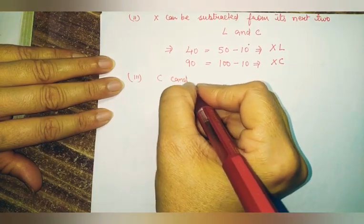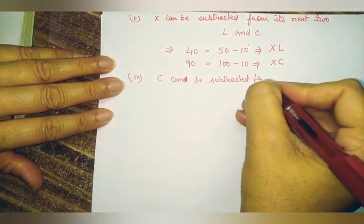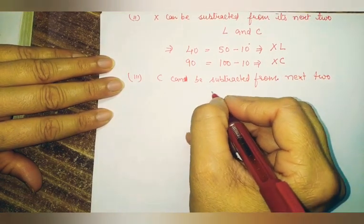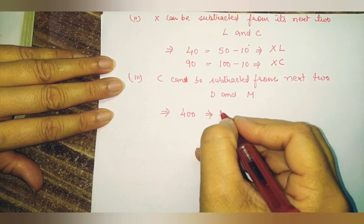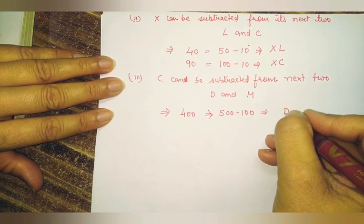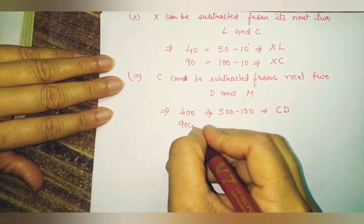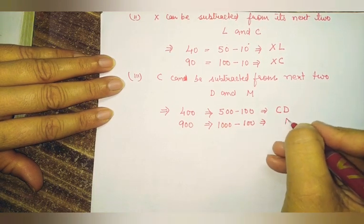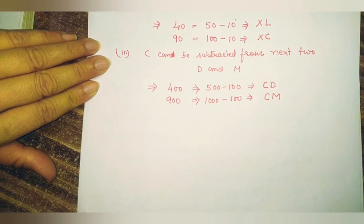The third sub-rule: C can be subtracted from its next two symbols, which are D and M. So if we want to write 400, that means 500 minus 100 — we use D with C on its left, giving CD. If we want to write 900, that means 1000 minus 100 — M is the symbol for 1000, and C written to its left gives CM, which represents 900.